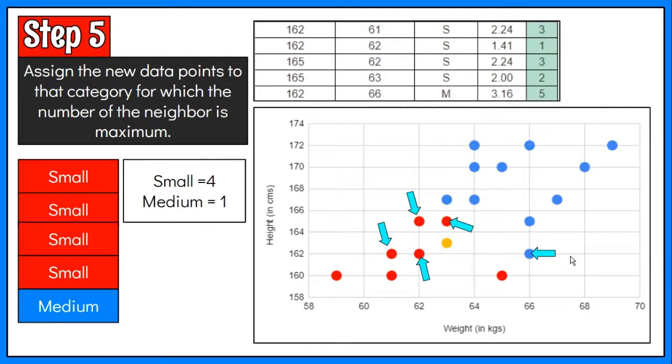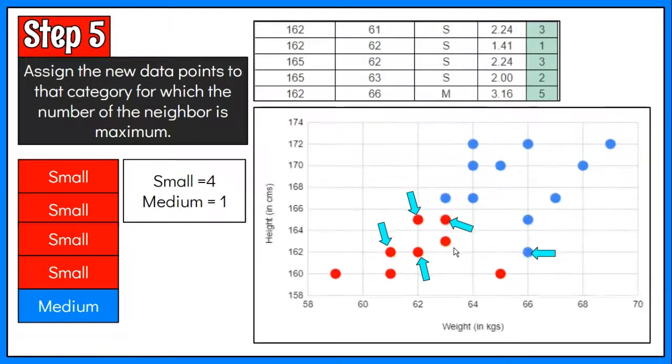With this said, we can now conclude that since there are more red dots in the nearest neighbors, the employee with a known shirt size is predicted to have a small size shirt.